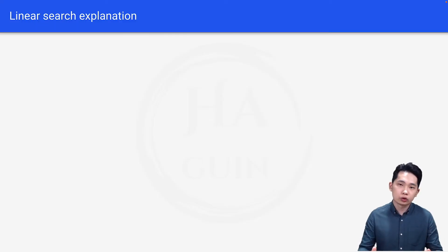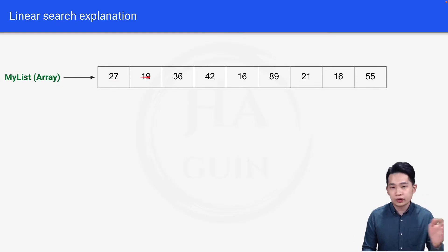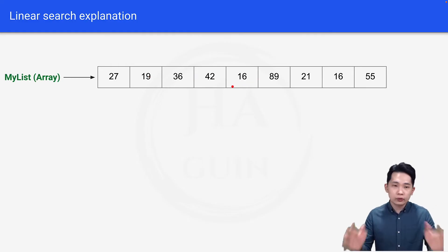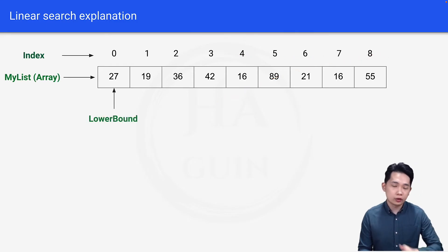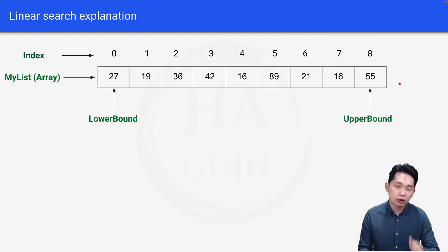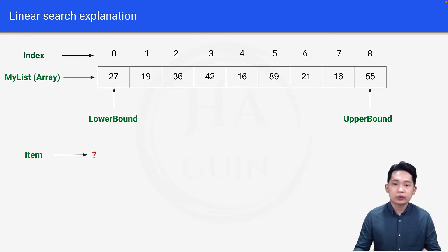Before we write the pseudocode, let's go through a demo example. I have my list array here: 27, 19, 36, 42, and so on. The index goes from 0 all the way to 8. The lower bound is index 0 (value 27) and the upper bound is index 8 (value 55). The item is the number we're trying to search. For this example, let's use 21 as the input item.